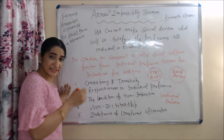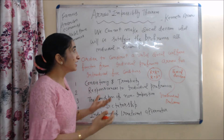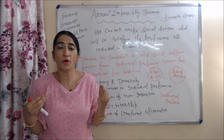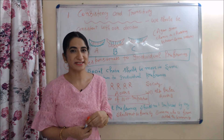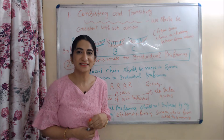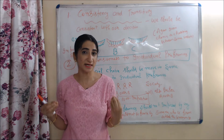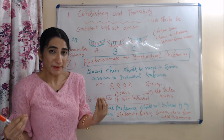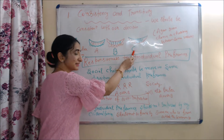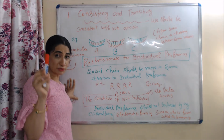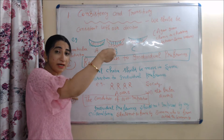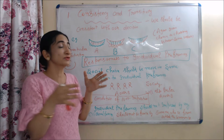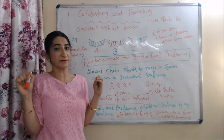We will discuss each condition and then see why we cannot make a social decision satisfying all individual preferences. The first condition is consistency and transitivity, which means we should be consistent with our decisions. For example, if given three baskets A, B, and C, and you choose basket A, you should consistently choose basket A again.